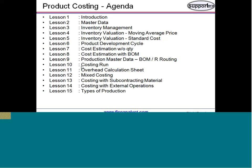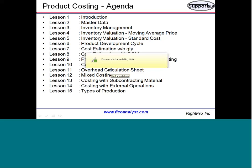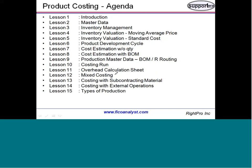We will also go into overhead cost calculation — what we call the costing sheet — and look at how the costing sheet impacts your overall standard cost estimation. Then we will look into mixed costing and costing with subcontracting materials. When you have subcontracting activities or external operations, we will see how the standard cost is handled.